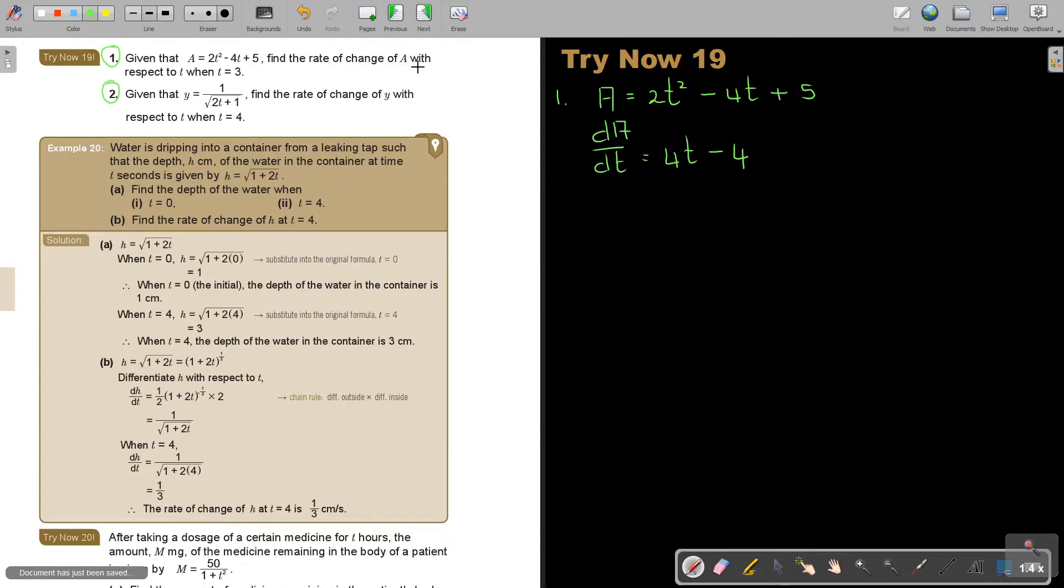So, the rate of change of A with respect to T. Basically, we're just going to say, when T is 3, dA over dT will be, and I substitute the 3.